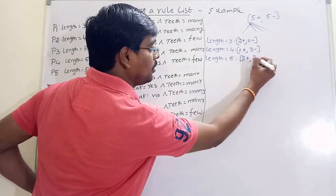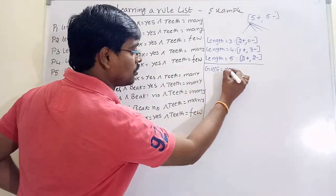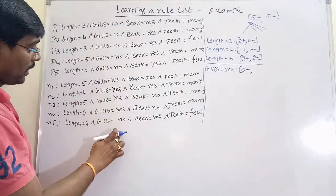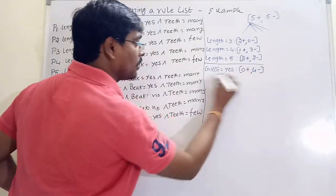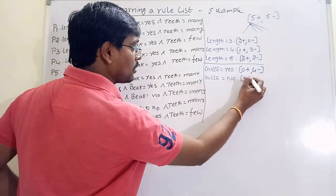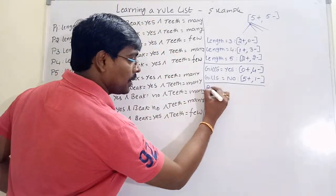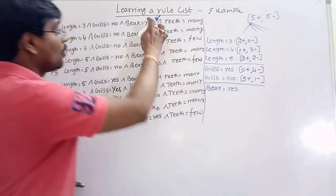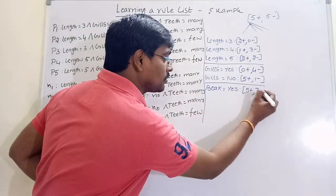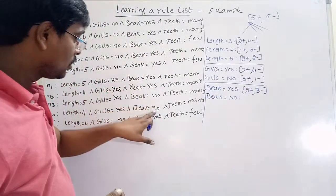Now for gills — gills has two options. If gills is equal to yes: zero positives and four negatives. If gills is equal to no: five positives and one negative. For bake: bake equal to yes has five positives and four negatives — wait, actually five positives and three negatives. Bake equal to no has zero positives and two negatives.